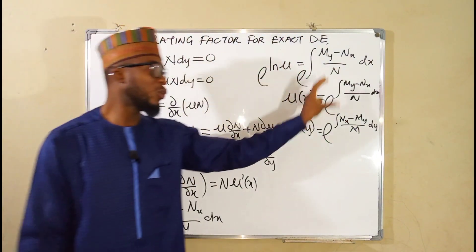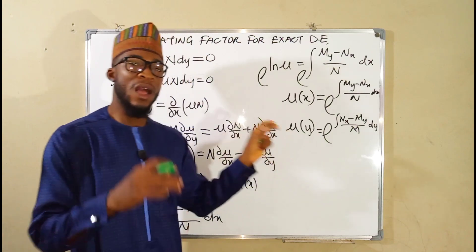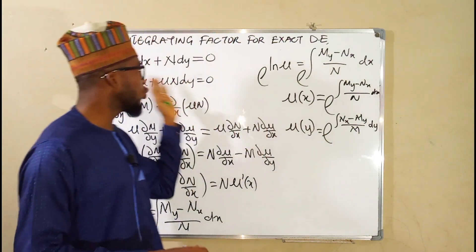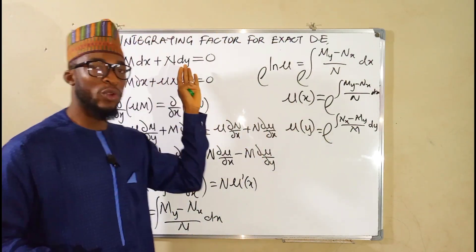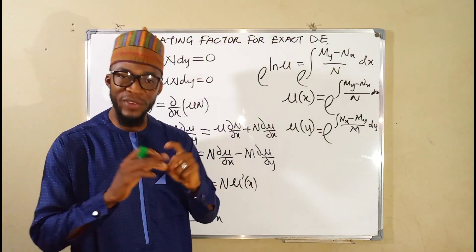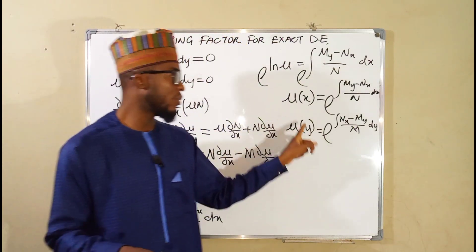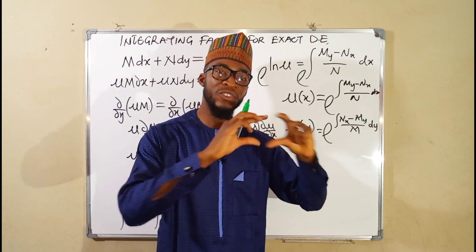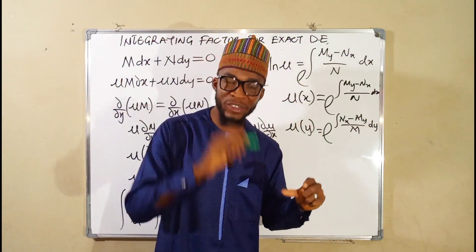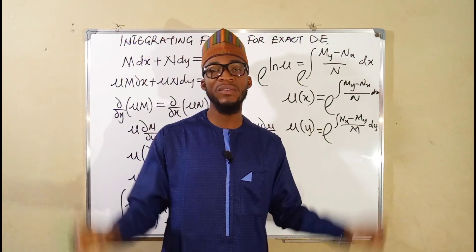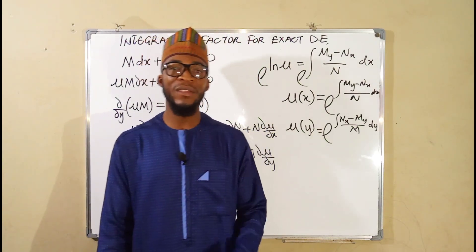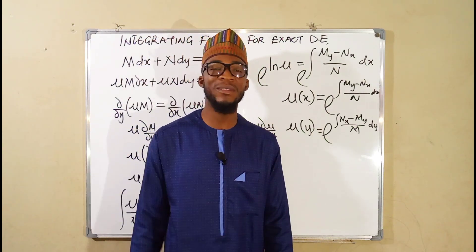So these are our two integrating factors. How to use them: take the first one and multiply through your main equation, then test whether it is exact. If it is not, take the second one and multiply through your equation — at that point your equation must become an exact differential equation. This is all I have for you today. Thank you for watching, do have a nice day.